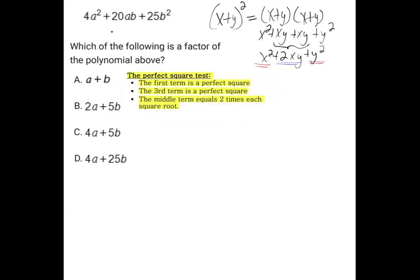So when you suspect that a polynomial is a perfect square trinomial, you can run the perfect square test like this. You say to yourself, well, is the first term a perfect square? And you test it out by taking the square root and writing it down. So the square root of 4a squared is 2a.